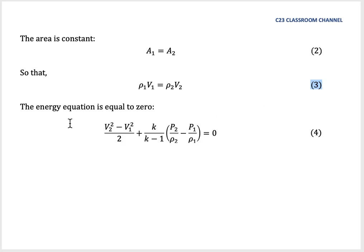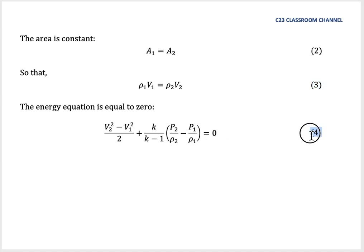The energy equation is set equal to zero, giving us: (V₂² − V₁²)/2 + [K/(K−1)] × (P₂/ρ₂ − P₁/ρ₁) = 0. This is equation 4.